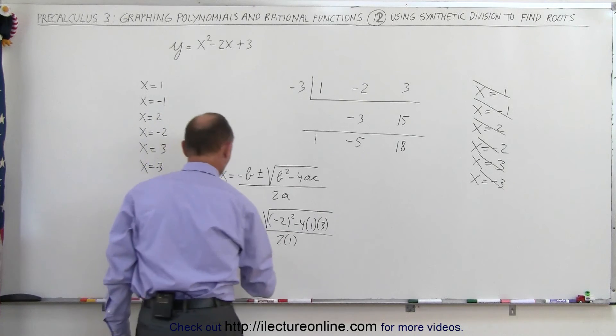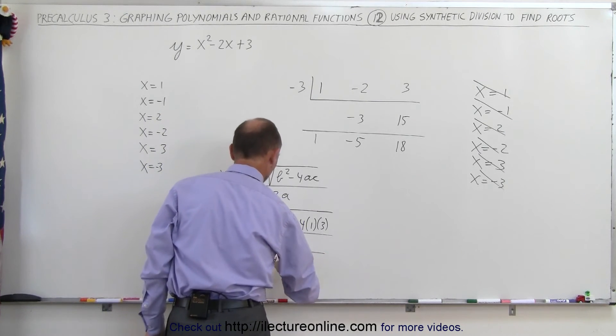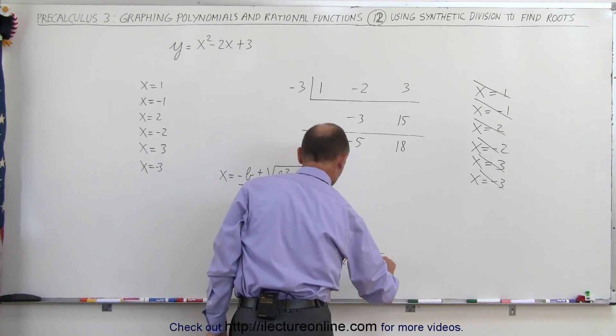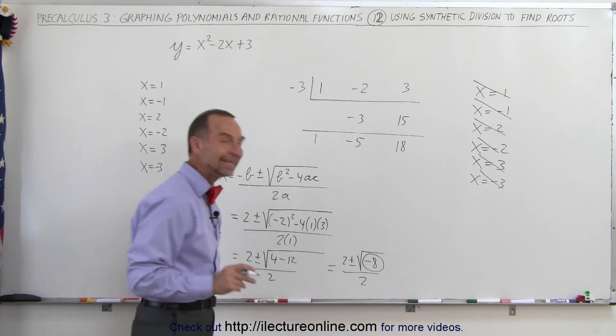So let's simplify that a little bit more. So this is equal to 2 plus or minus the square root of 4 minus 12 divided by 2, which is equal to 2 plus or minus the square root of negative 8 divided by 2. Notice our determinant is a negative number.